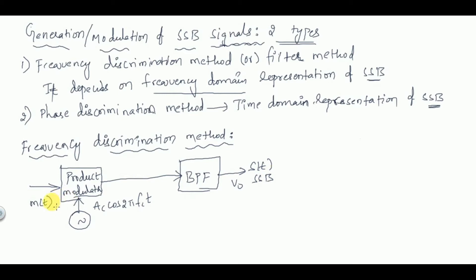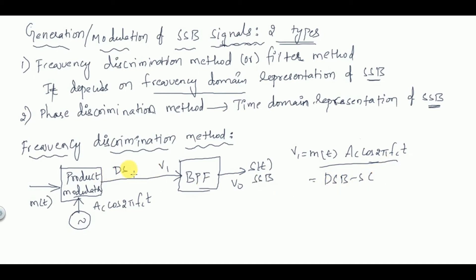When m(t) and Ac·cos(2πfc·t) are given to the product modulator, it multiplies the two input signals. The intermediate output V1 equals m(t)·Ac·cos(2πfc·t), which is a DSBSC signal — double sideband suppressed carrier. This consists of two sidebands, but in SSB we need only one sideband.